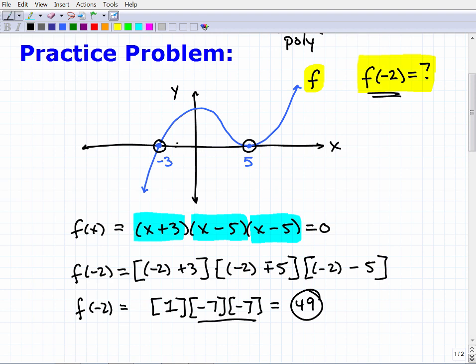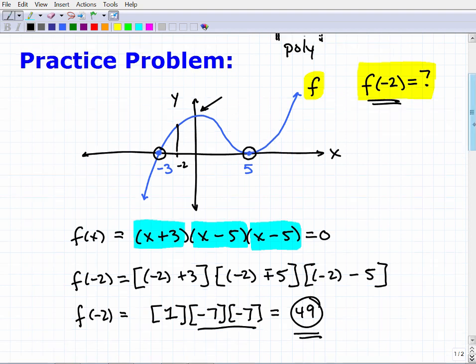Looking at this graph at negative 2, we have a positive value. At negative 2, this is way up here at 49. Another thing about these tests: you'll see graphs that are not to scale, and sometimes they do that purposely to throw you off. But this is basically how you would approach this answer.